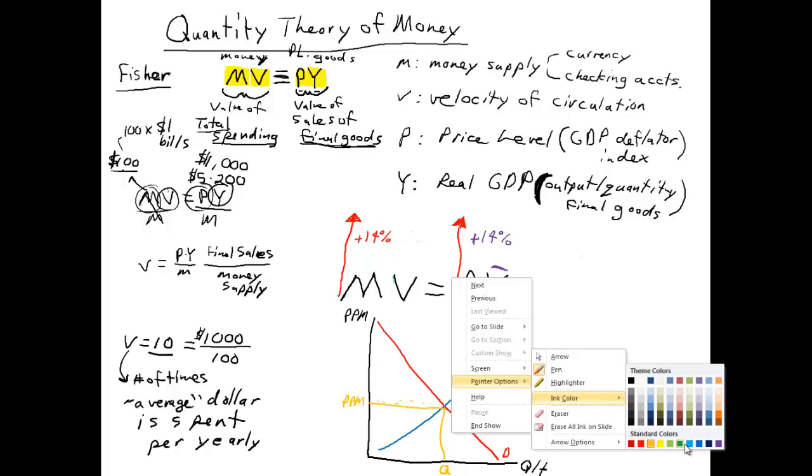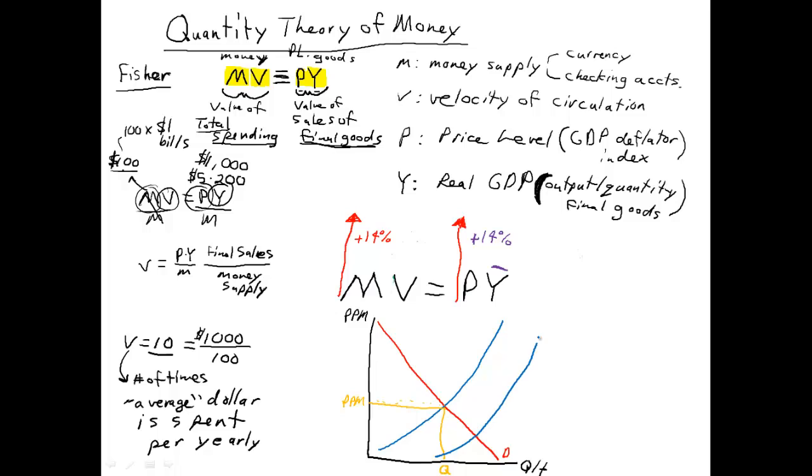Very simple. We have the supply of money growing. Here's supply two. Supply one. Faster than the demand. And the result is that the purchasing power of money declines. The value of money goes down. Remember, as the value of money goes down, the price of all goods goes up.